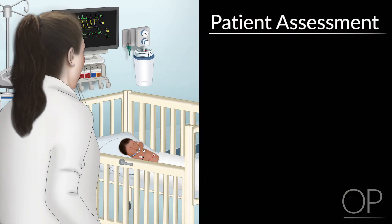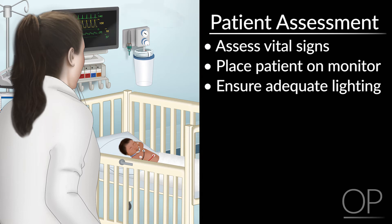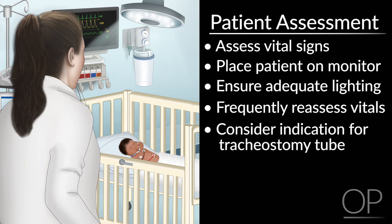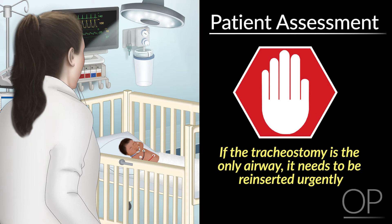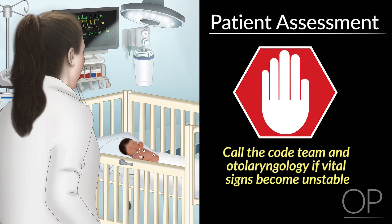Assuming the patient is stable, upon entering the room, first assess vital signs and, if possible, ensure that the patient is on a monitor. Adequate lighting that allows you to have your hands free is critical — a headlight is ideal. Remember to reassess vital signs frequently and consider the indication for the tracheostomy tube, as well as intubation history. If the trach was performed for upper airway obstruction, the tracheostomy tract may be the patient's only airway. If the trach is the only airway, then the trach needs to be reinserted urgently. This is best done by experienced personnel. In any instance, if vital signs become unstable, the code team and otolaryngology should be called.